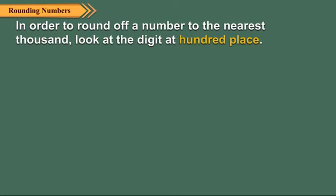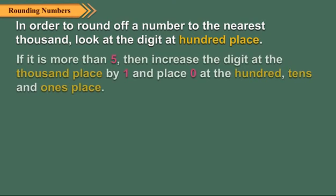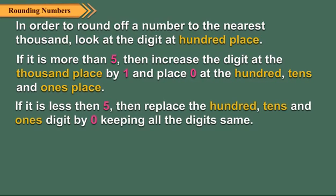In order to round off a number to the nearest thousand, look at the digit at the hundreds place. If it is more than five, then increase the thousands place by one and place zero at the hundreds, tens, and ones place. If it is less than five, then replace the hundreds, tens, and ones digit by zero, keeping all the other digits the same. Let us see some examples.